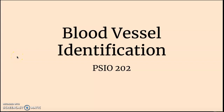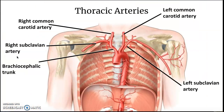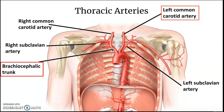Now we're getting into identifying blood vessels. We're going to start in the thoracic cavity with arteries. First off, we have the brachiocephalic trunk branching off of the ascending aorta.